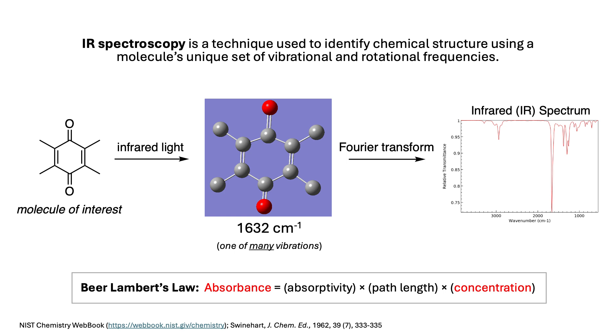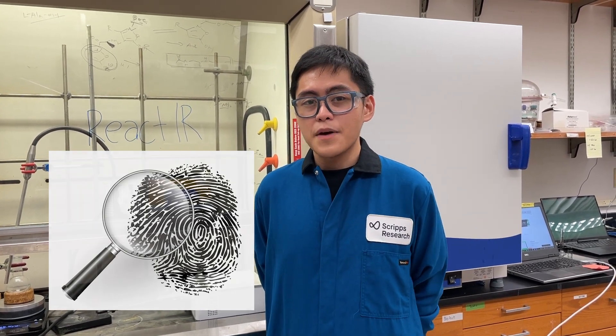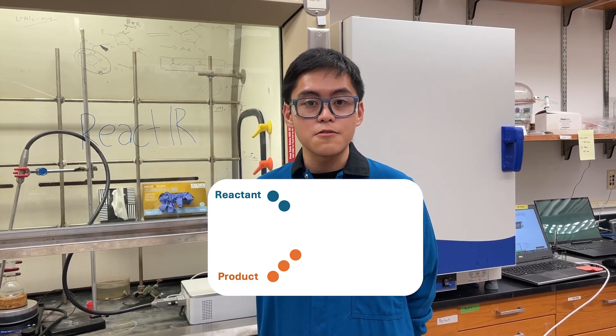Moreover, FTIR follows the Beer-Lambert law, which means that the absorbance of the molecule is directly proportional to its concentration. Think of it this way: the infrared spectrum of your molecule is its unique chemical fingerprint, and what the React-IR does is it collects the overall fingerprint set of your reaction. You should expect your reactant fingerprints to decrease over time, while your product fingerprints should become more prominent as time goes by.